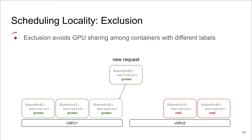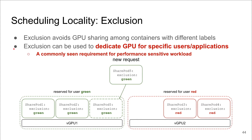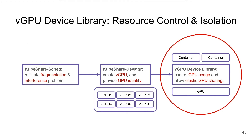Finally, exclusion is used to exclude GPU sharing among containers with different labels. For example, SharedPod 5 can only be scheduled to vGPU 1 because vGPU 2 already has shared pods labeled in red. Exclusion can be used to dedicate a GPU to specific users or applications, which is a common requirement for performance-sensitive workloads.